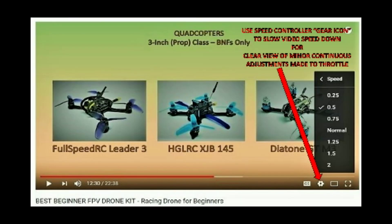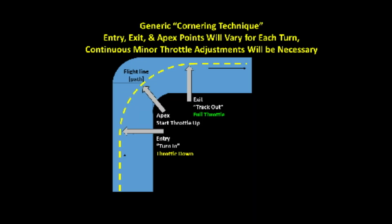The best way to get a clear picture of this is to slow the video of the simulations down using the speed control and the gear icon at the bottom right under the video, next to the letters CC. Put it at half or quarter speed and watch the throttle adjustments necessary for altitude control. Also look for how the throttle is used going into a coordinated turn — where the throttle is decreased at the turn-in or turn entry, and then slowly increased from the apex of the turn to the track-out or turn exit. These are the techniques which we'll be practicing today.